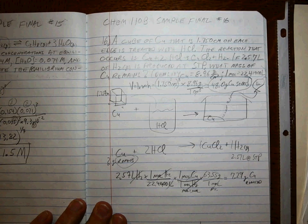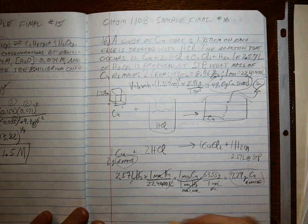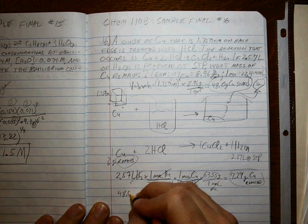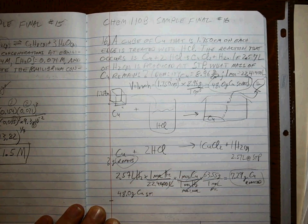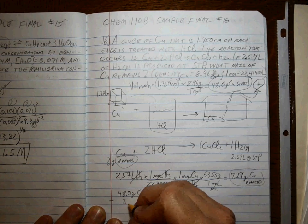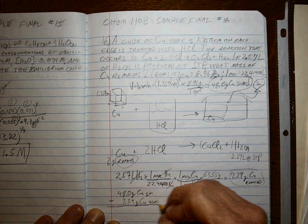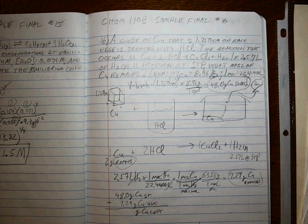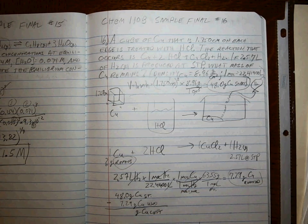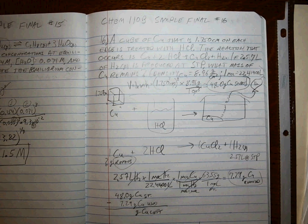And that value to three sig figs is 48.0 grams of copper that you started with. So if we know how much we started with, and we know how much we reacted, subtracting the two should give us the moles that's left. So what is 48.0 grams of copper start minus 7.29 grams of copper used? It's the grams of copper left. So whenever you do that math, what do you get?